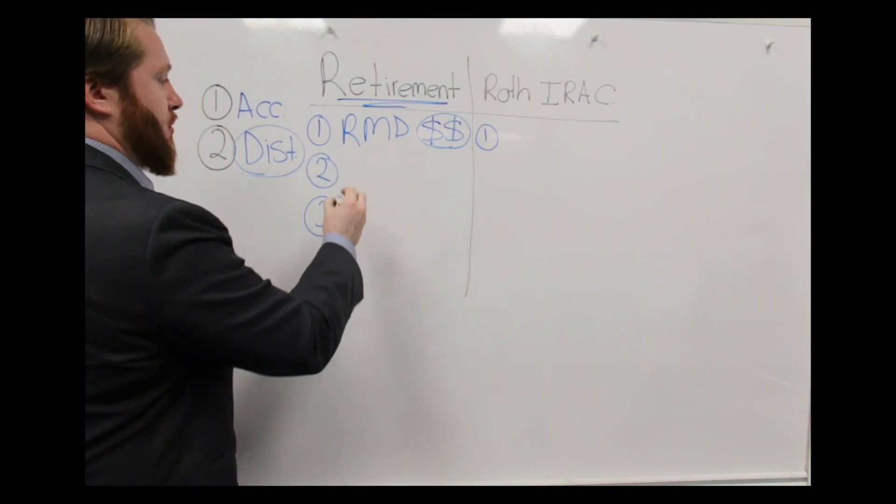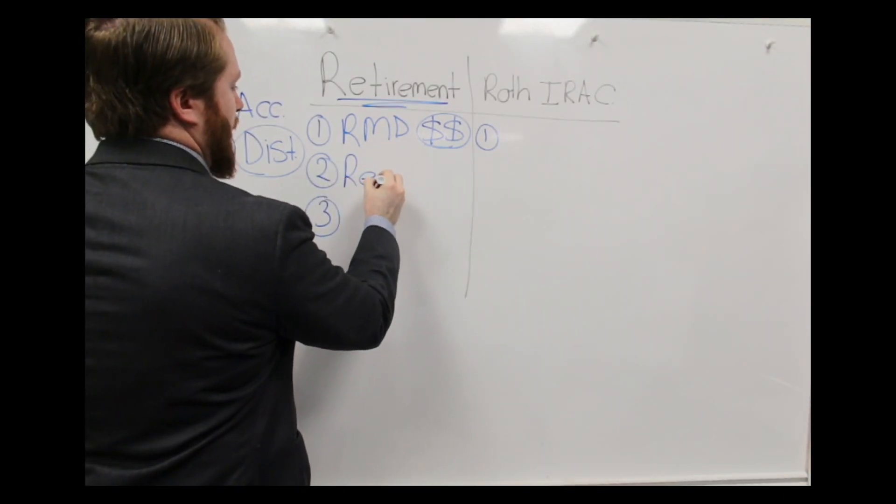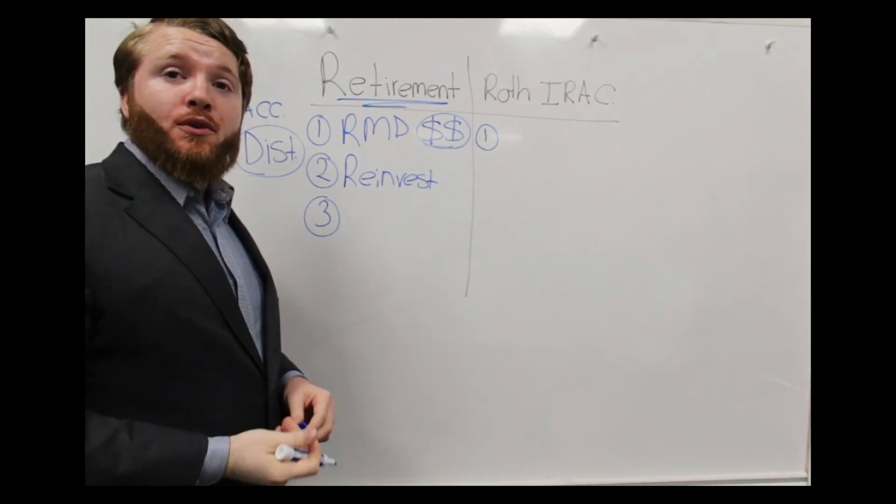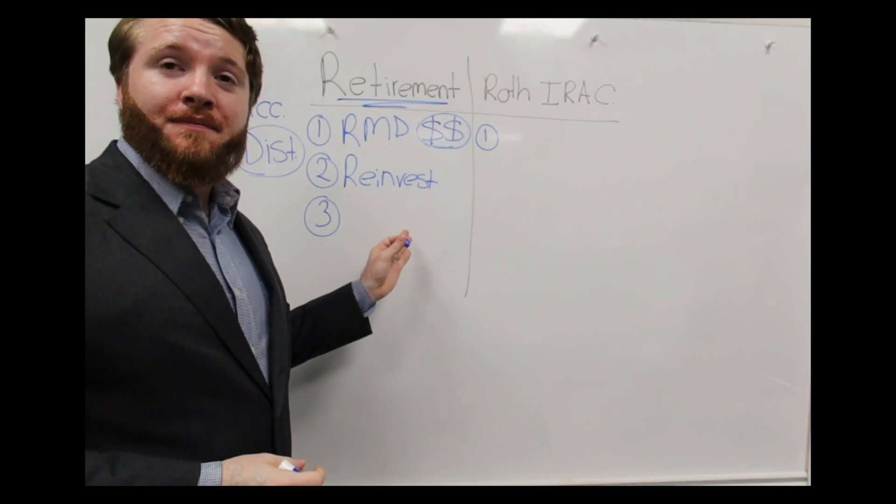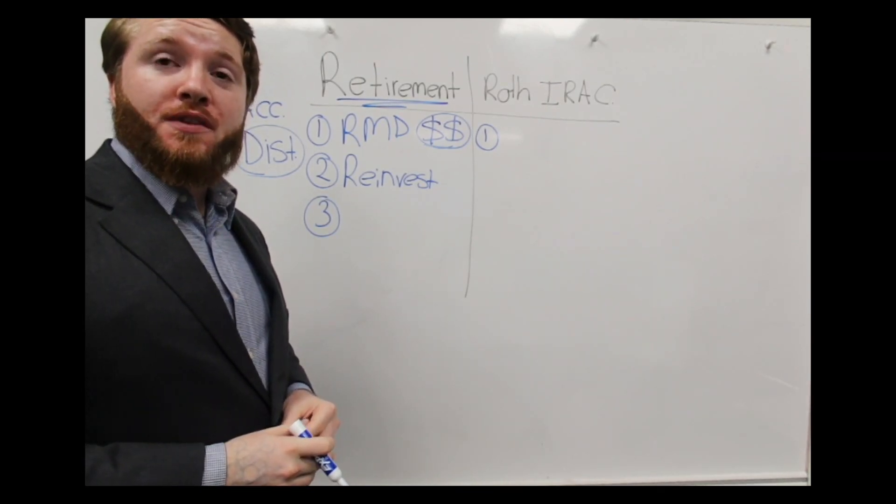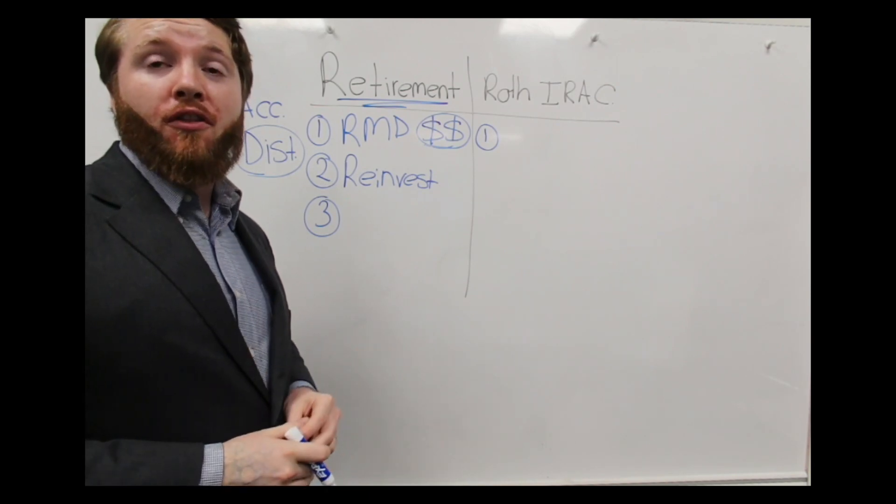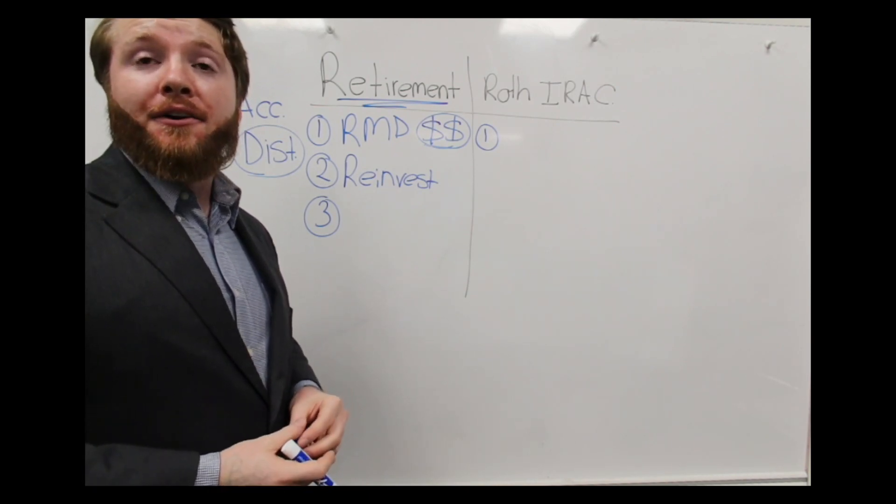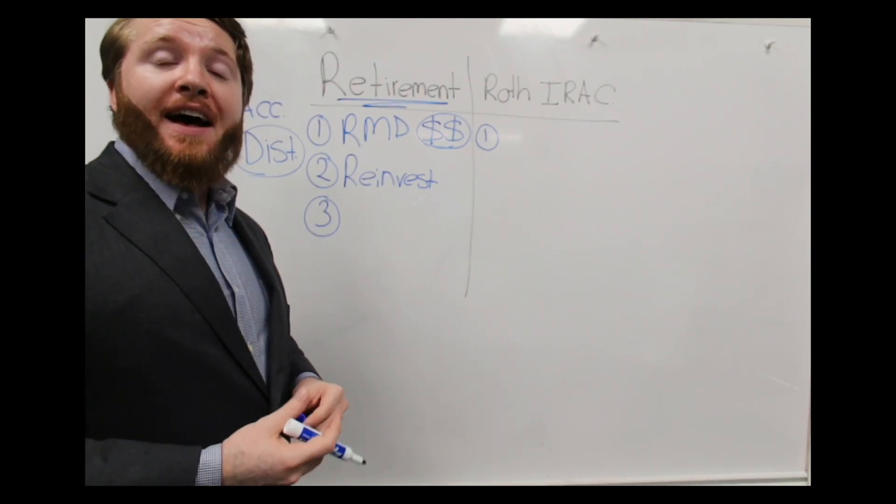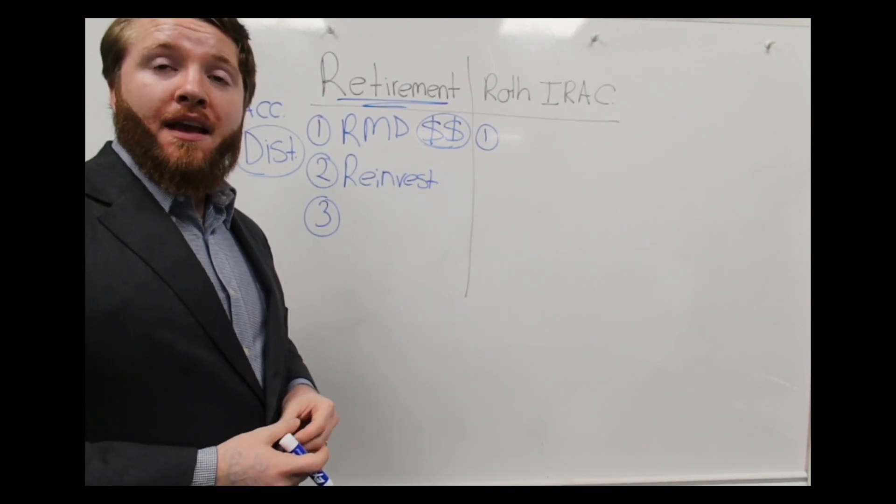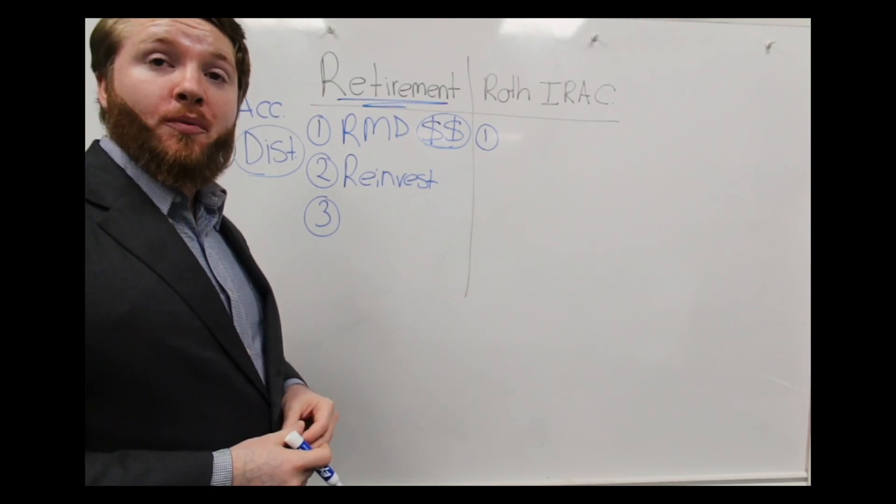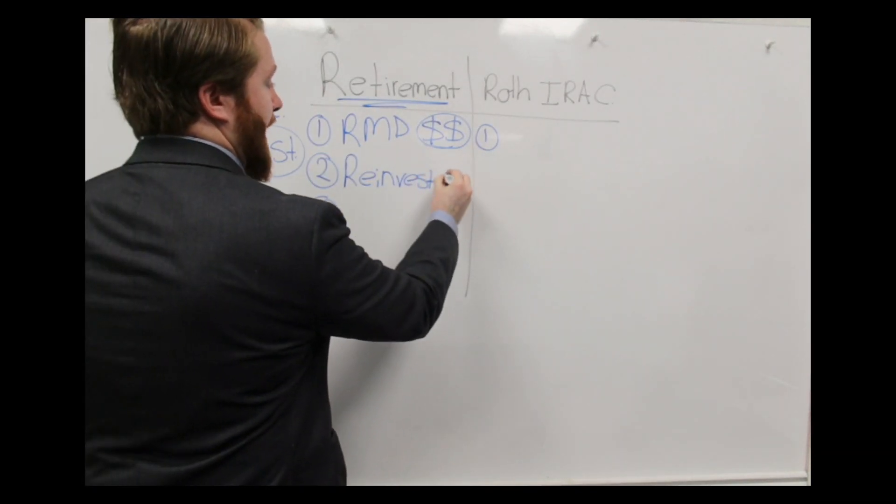The second thing we look at is, what do you do with those RMDs? You can spend the money, you can give it away to a charity, or you can reinvest it. If you choose to reinvest some or all that money that you get from those IRAs, you can't put it into a Roth IRA. You can't put it in an IRA. You can, though, put it in a bank or into an after-tax brokerage account. And if it grows in that after-tax brokerage account, you'll pay tax again. It'll be double taxed. So we need to add that up as well.